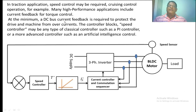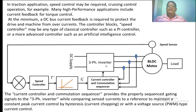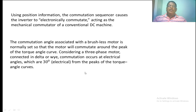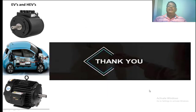The DC bus current feedback is also taken to protect the drive from overcurrents. To control the inverter and get variable voltage, we use the PWM control technique, which controls both the voltage and frequency applied to the BLDC motor. Using position information from the hall effect sensor, the computation sequencer causes the inverter to electronically commutate, acting as a mechanical commutator of a conventional DC machine. The commutation angle is normally set so that the motor commutates around the peak torque angle curve, at an electrical angle 30 degrees from the peak of the torque angle curve for a three-phase motor connected in delta or star.